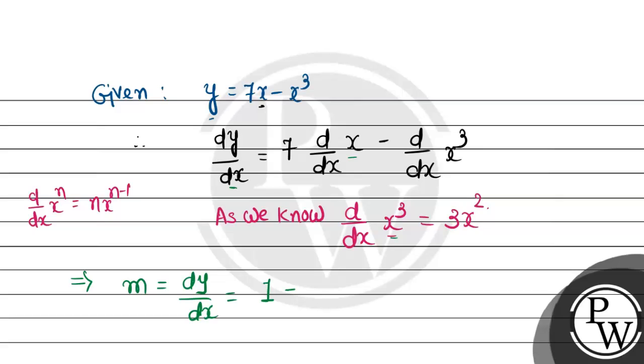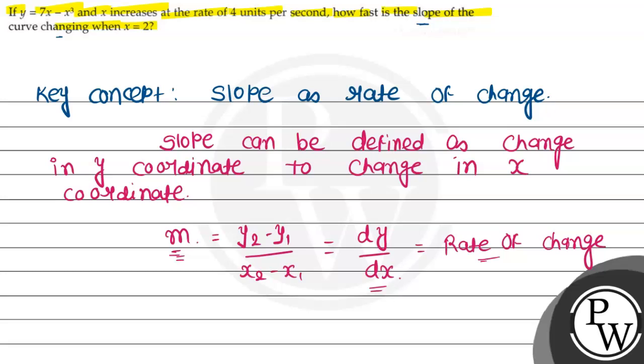So, same way, x cubed becomes 3x squared. So here we get 1 minus 3x squared. This will be our slope function.